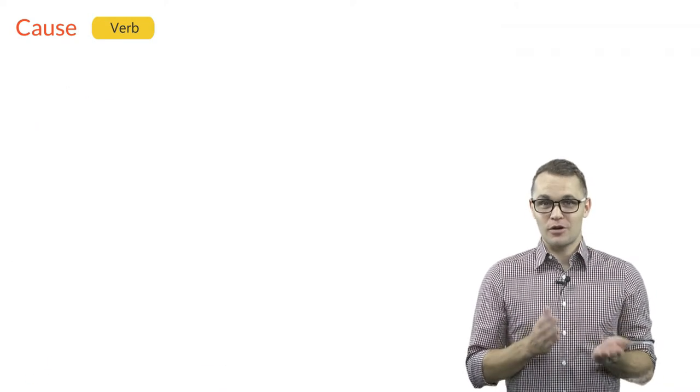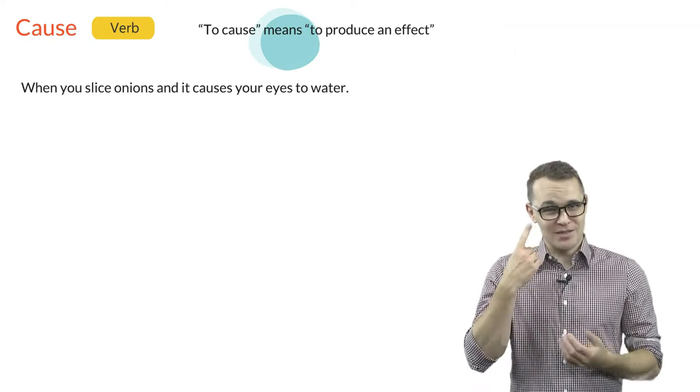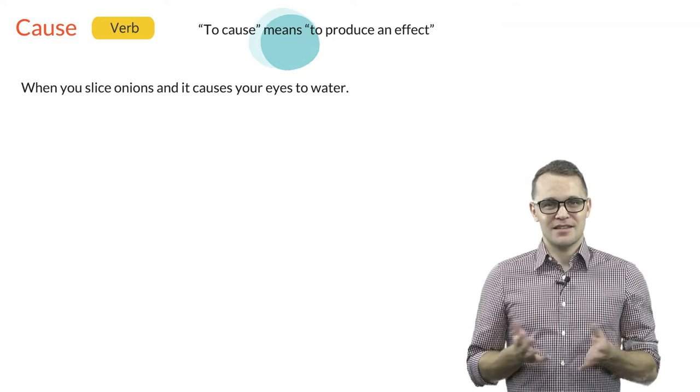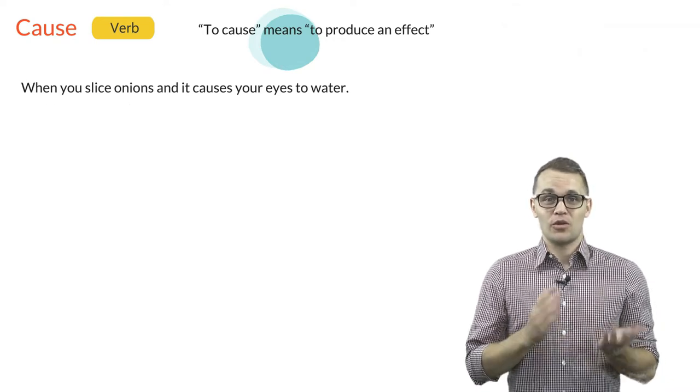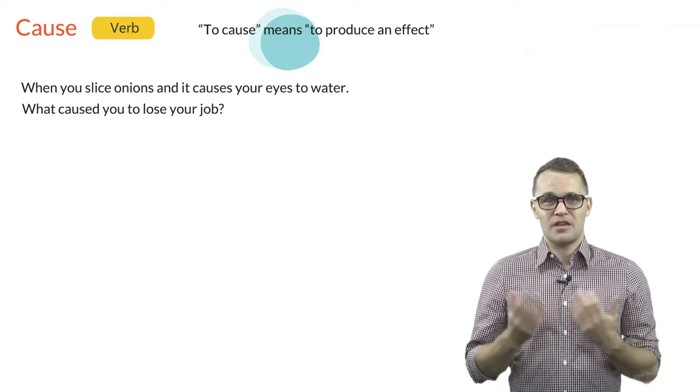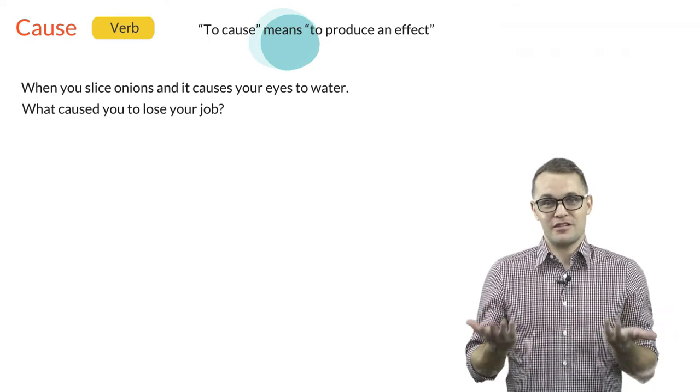The word cause can also be a verb. The verb to cause means to produce an effect, like when you slice onions and it causes your eyes to water. The past tense, of course, is caused, as used in this sentence here. What caused you to lose your job? In this sentence, someone wants to know the reason the other person lost their job, the latter being the effect here.